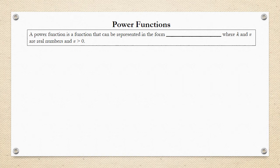A power function is a function that can be represented in the form f(x) = kxⁿ. In this case, k and n are real numbers, and n, which is the exponent, must be greater than 0. The other thing to note is that k is called the coefficient.